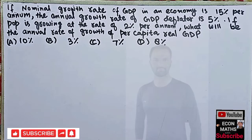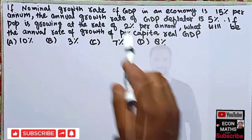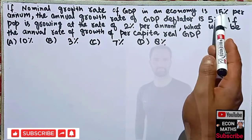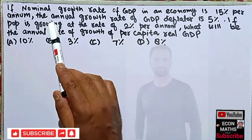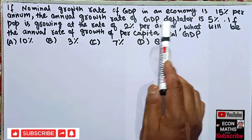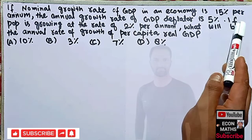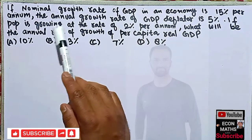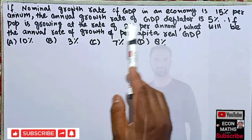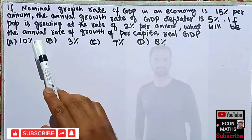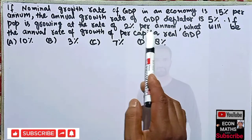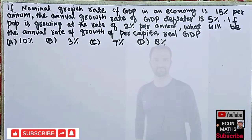In this video we will try to solve another question on macroeconomics. The question is: if the nominal growth rate of GDP in an economy is 15 percent per annum, the annual growth rate of the GDP deflator is 5 percent, and population is growing at the rate of 2 percent per annum, what will be the annual rate of growth of per capita real GDP?